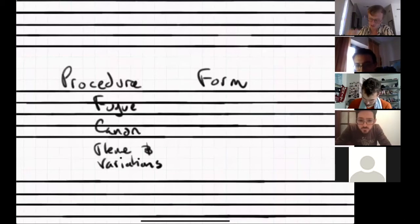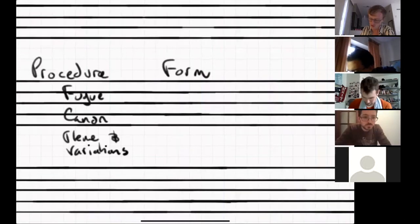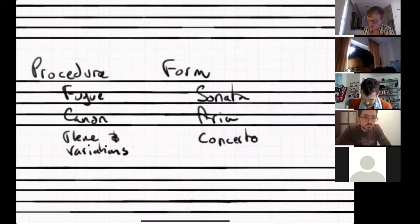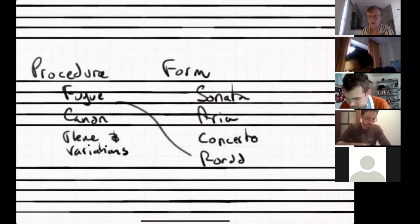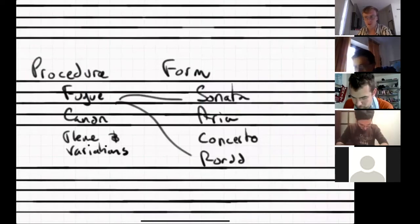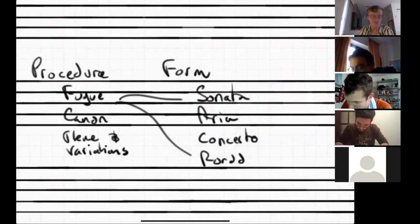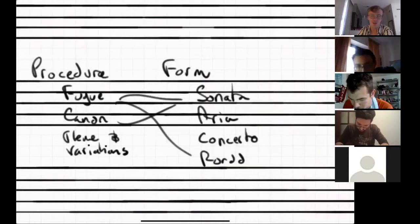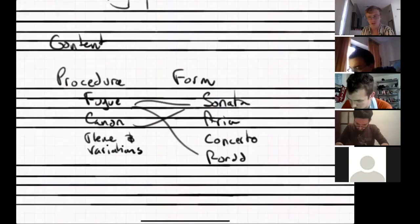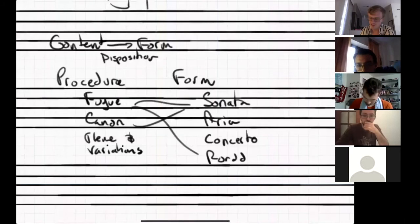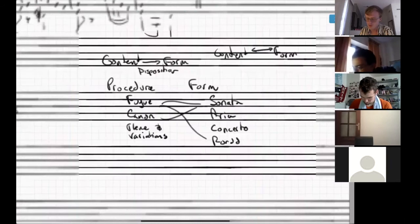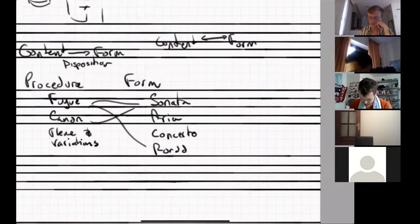Form is difficult to define, but we can say it's the arrangement of ideas according to certain principles — things like the sonata, aria, concerto, or rondo. You can integrate procedures and forms: there are fugal rondos by Haydn, fugal sonatas by Mozart, the Magic Flute overture as a truncated sonata form, a canonic sonata by Bach. When dealing with procedure alone, content controls form — what we call disposition. But when form is integrated, content and form influence each other.